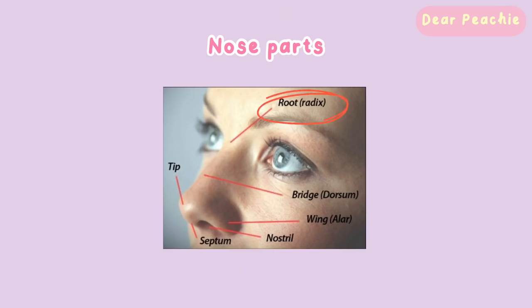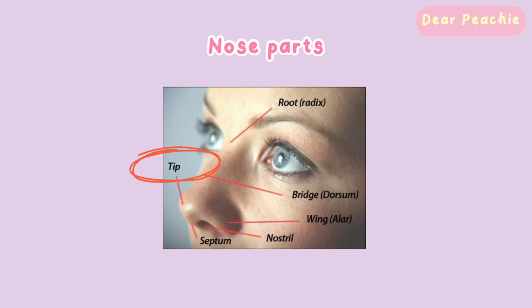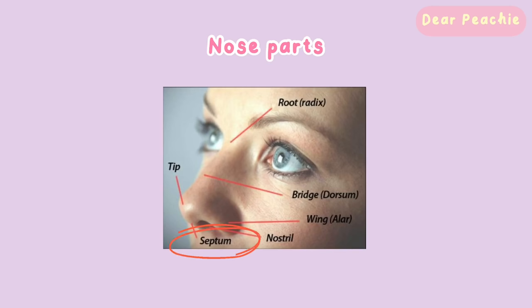As you can see in this picture on your screen, our nose is broken down into several parts. This is the root of your nose, then the root is extended to the bridge. The end of the nose bridge is called the nose tip. The septum is the base of your nose. Nose alar, or nose wings, are the sides of your nose.